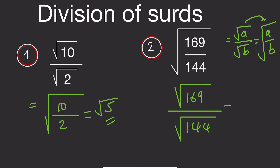So it's easier to simplify. We all know that 169 is the same as 13 times 13, so the square root of 169 will give us 13. And the square root of 144 will give us 12.